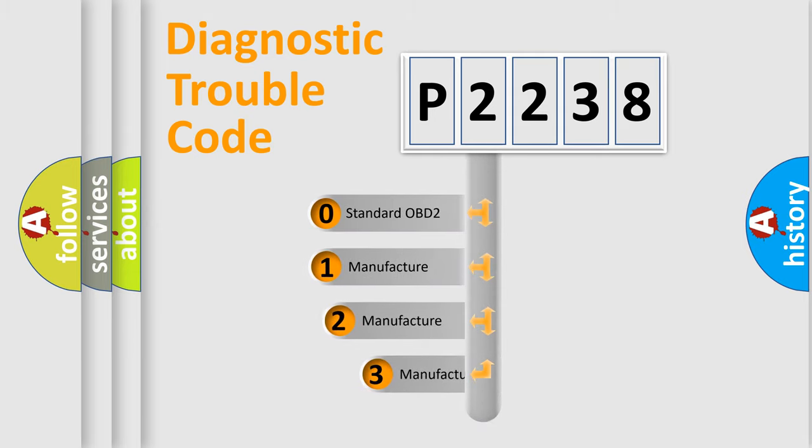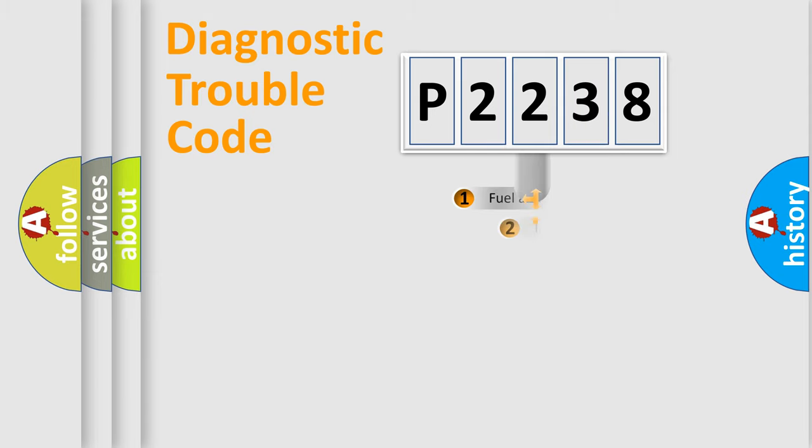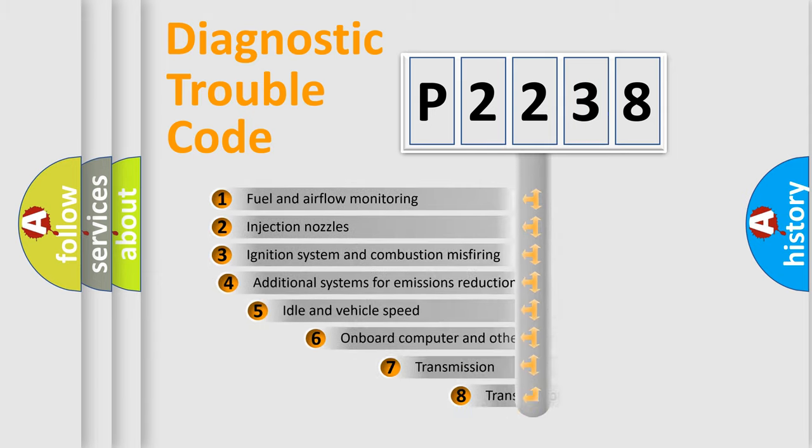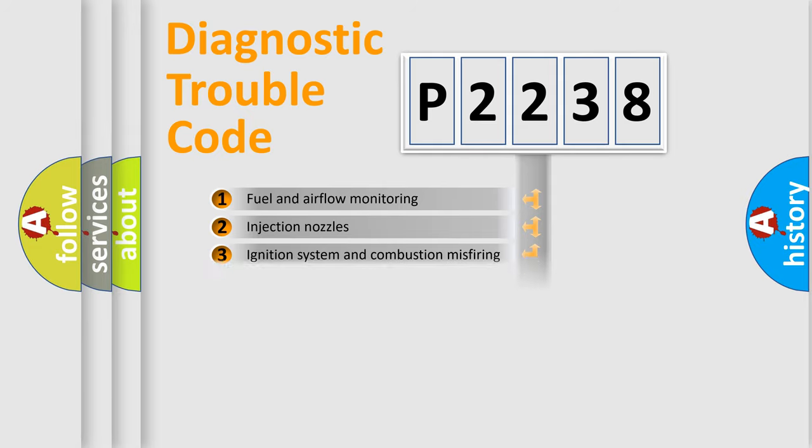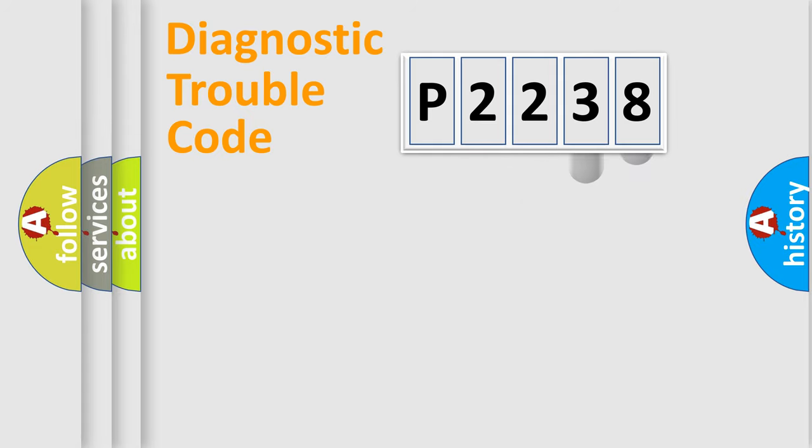If the second character is expressed as zero, it is a standardized error. In the case of numbers 1, 2, 3, it is a manufacturer-specific error. The third character specifies a subset of errors. The distribution shown is valid only for the standardized DTC code.